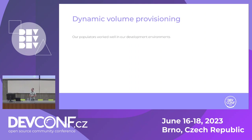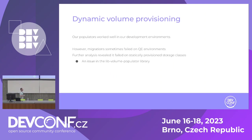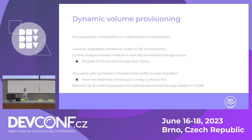Next is dynamic volume provisioning. Our implementation worked nicely in development environments, but QE reported that migrations sometimes fail on testing environments. We found this happens when the target storage class doesn't support dynamic volume provisioning, only statically provisioned volumes. We identified it as an issue in the lib-volume-populator library, reached out to the maintainers, but didn't find an agreed solution. Since such storage classes are uncommon and not critical for us, we chose to block using them in flows that use populator pods.